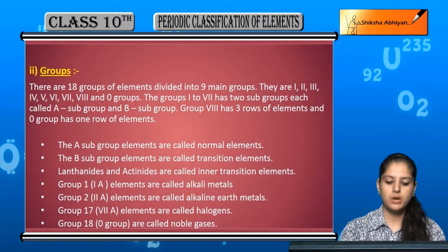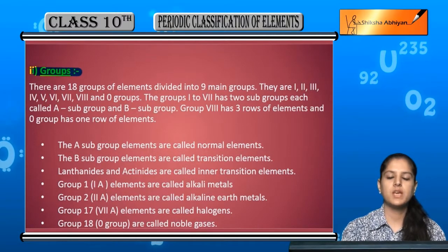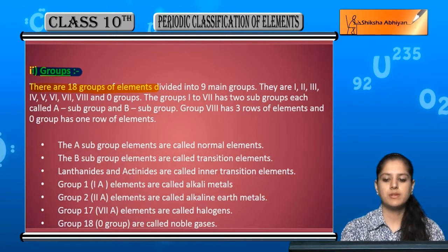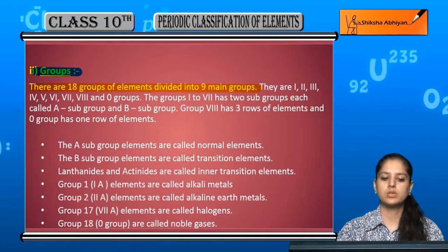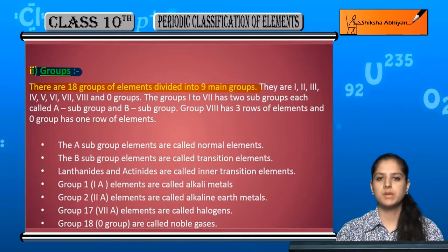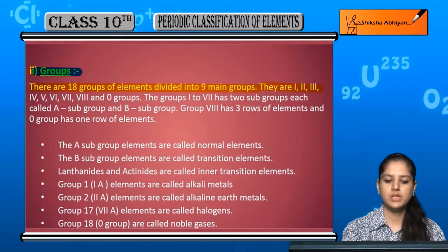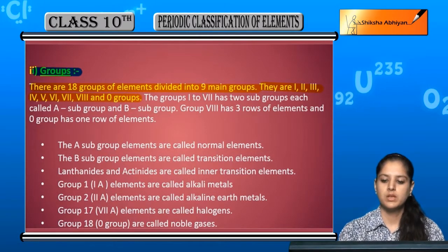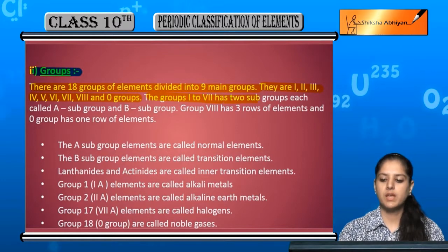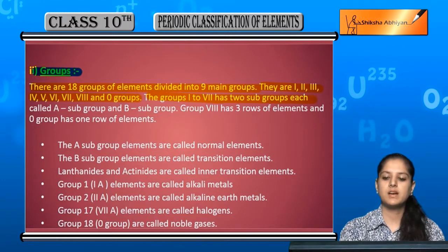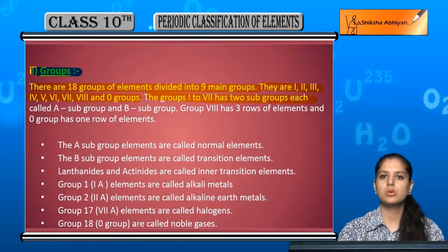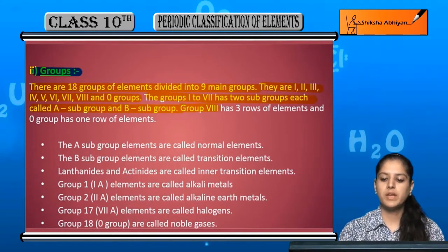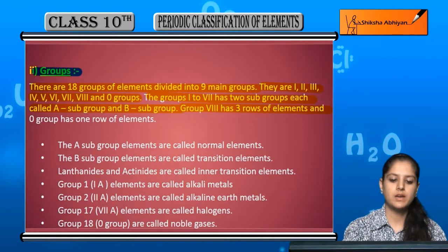Now talking about groups — there are 18 groups of elements divided into 9 main groups: 1, 2, 3, 4, 5, 6, 7, 8, and 0. Groups 1 to 7 each have 2 subgroups, called the A subgroup and B subgroup. Group 8 has 3 rows of elements, and group 0 has 1 row of elements.